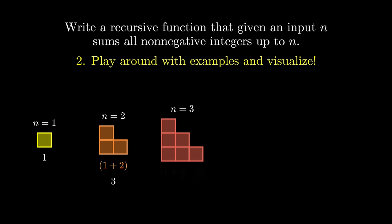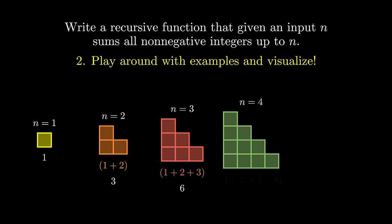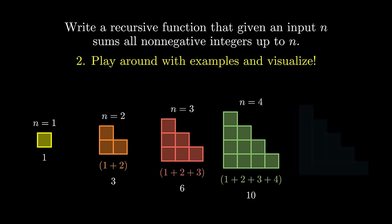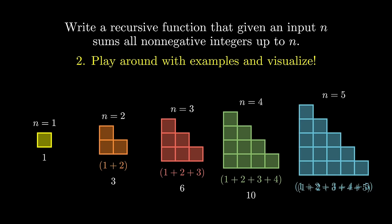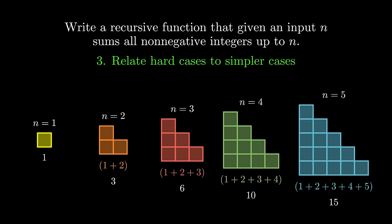That way our sum is the total number of individual blocks in this triangle. You can try as many examples as you want. Once we have a set of examples we want to move to the third step, which involves relating larger examples to smaller examples. Take a second to see if you see any relationships between the cases here. Put in more specific terms, with these examples ask yourself: if I was given the answer for the n equals 4 case, could I solve the n equals 5 case? If I was given the answer to the n equals 3 case, could I solve the n equals 4 case?